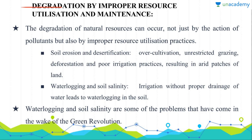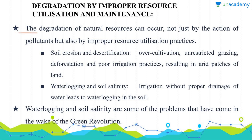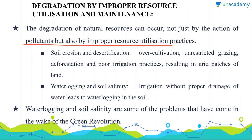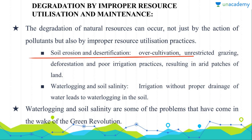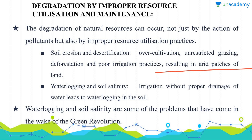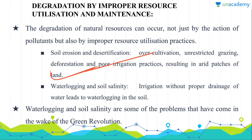Now, degradation by improper resource utilization and maintenance. The degradation of natural resources can occur not just by the action of pollutants but also by improper utilization practices. Soil erosion and desertification can occur due to over-cultivation, unrestricted grazing, deforestation, and poor irrigation practices. For example, in Punjab, over-irrigation causes salinity in the soil, resulting in arid patches of land which later convert into desert-like conditions.